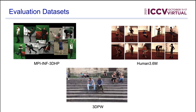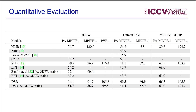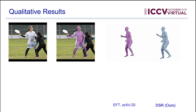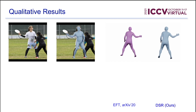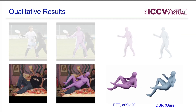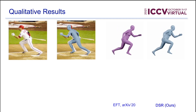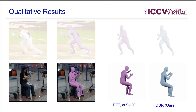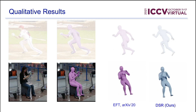We evaluate our method on three datasets: MPI-INF-3D-HP, Human3.6M, and 3DPW. We outperform previous methods on 3DPW and Human3.6M, and obtain on-par results on MPI-INF-3D-HP. Here are some qualitative results — the mesh in purple is from EFT, and the one in blue is our DSR method. As you can see, our method accurately estimates the 3D human shape and pose, and outperforms state-of-the-art methods in the case of loose clothing.